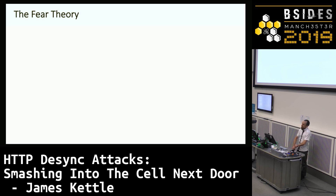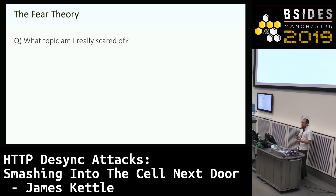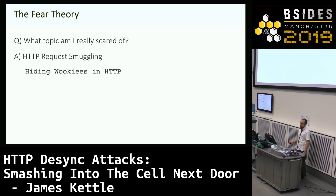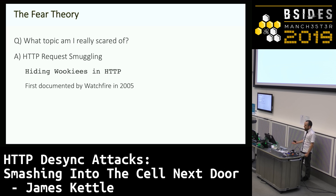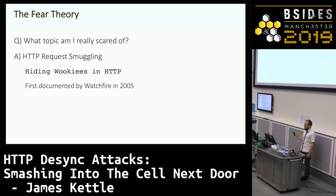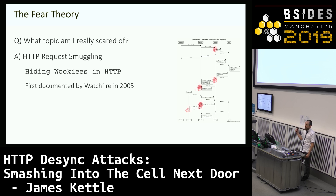During some research last year, I came up with a theory: if you're trying to select a topic to research, the best topic is the one that makes you the most nervous. This year I thought I'd try this theory out, so I asked myself what topic am I personally really scared of trying? The answer was HTTP request smuggling. I saw a presentation called Hiding Rookies in HTTP three years ago at DEFCON — a thrilling presentation, but it left me too nervous to tackle this topic myself. One reason is that this technique was first documented way back in 2005, and yet I'd never seen it successfully used on a real website. Another is that my technical understanding just wasn't there, so some of the diagrams made absolutely no sense to me.